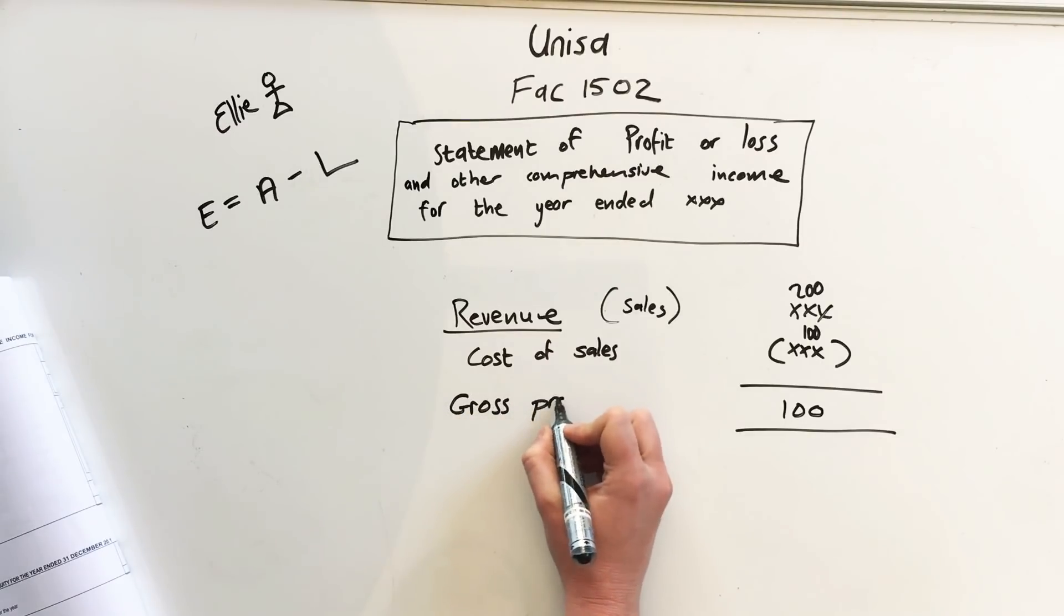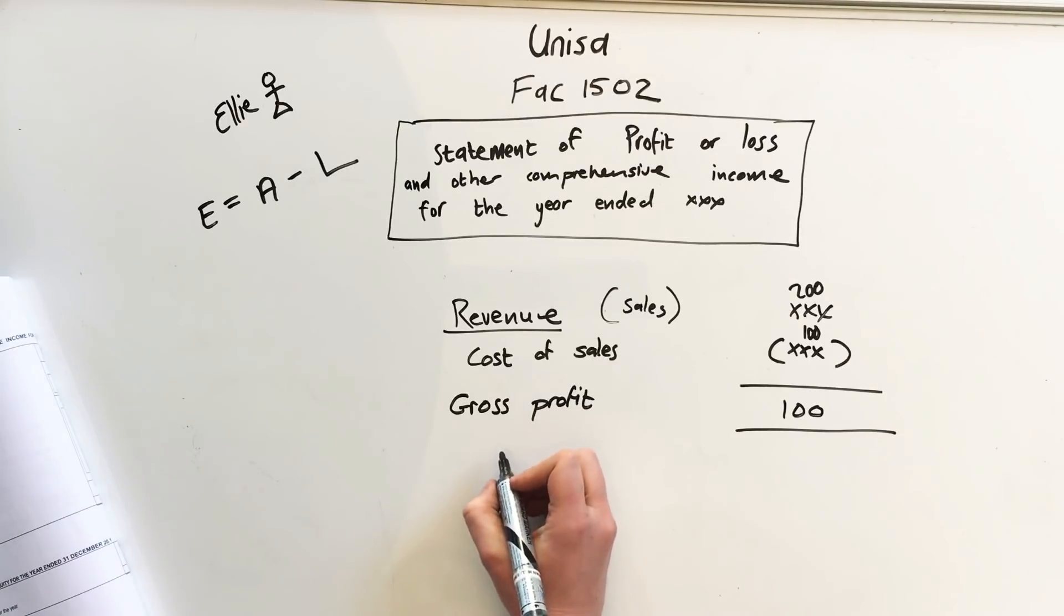If we have any other income, we put it here: other income. This could be anything like rental income, credit losses recovered, or interest on investments, any other type of money that you got in. You just write it here under other income.